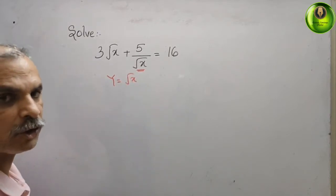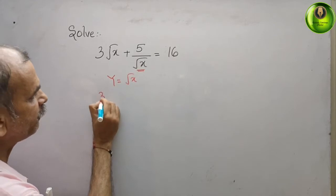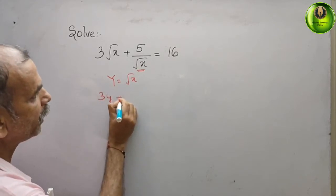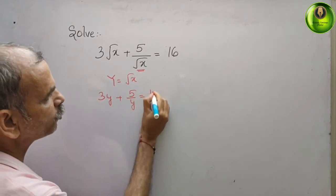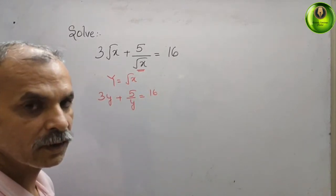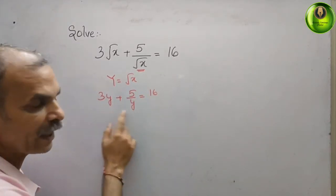So now your new equation is what? 3y plus 5 by y, that is equal to 16. Now go for a LCM, that is your y.